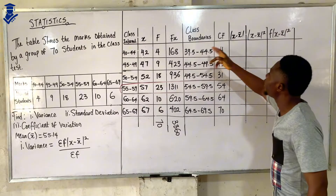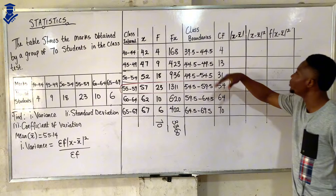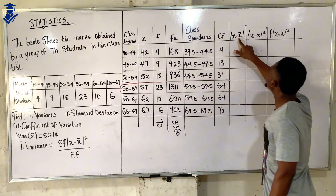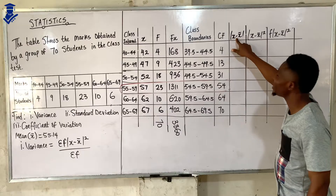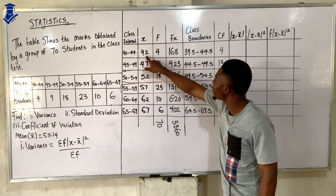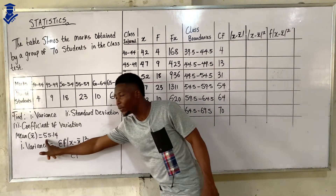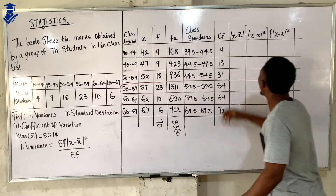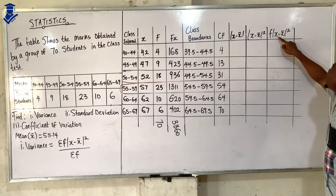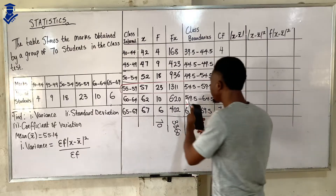We already used this table to find the mean, median, and mode. Now we need to add a column containing x minus x-bar — that means each x value minus the mean, 55.14. Then we need columns for (x minus x-bar) squared and f multiplied by (x minus x-bar) squared.